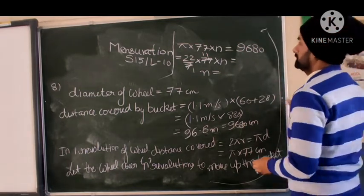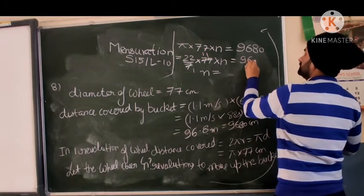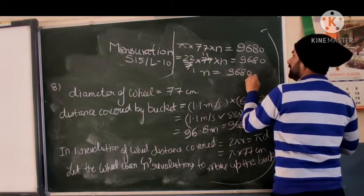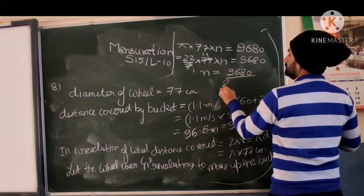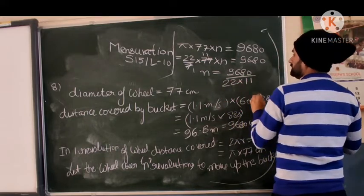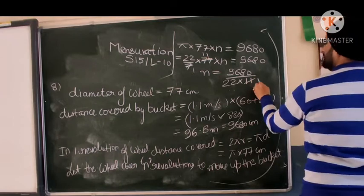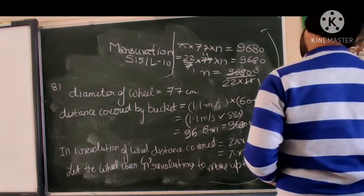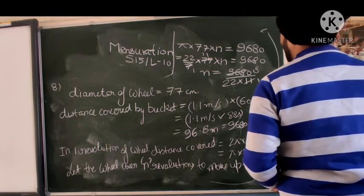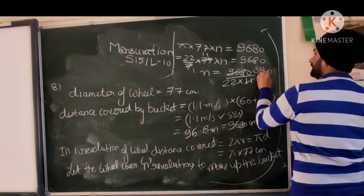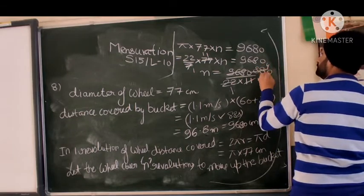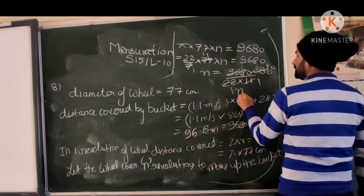So N will be 9680 upon circumference 2πr. That's 2 times 22/7 times 77/2. Simplifying: 88, 88, so N will be equal to 40.